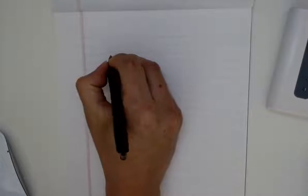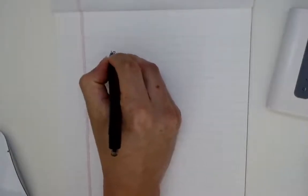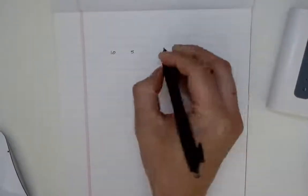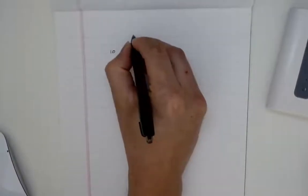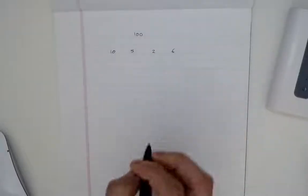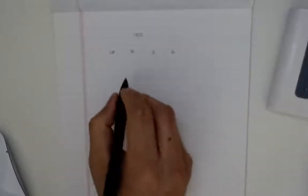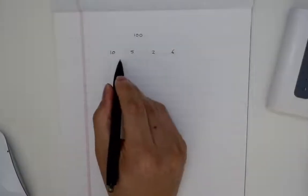So our example was 10, 5, 2, 6. And we have a total of 100 that we want to be less than.